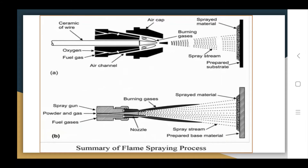In the flame spraying operation, the main process parameters are: the oxygen-to-acetylene ratio, the powder particle size, and the form of the coating material — whether rod, wire, or powder. A third parameter is the velocity at which the material is sprayed onto the substrate surface. Additional important parameters are the substrate pre-treatment and the nozzle-to-substrate distance. These four to five parameters control the quality of the coating.